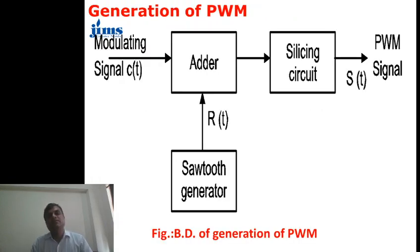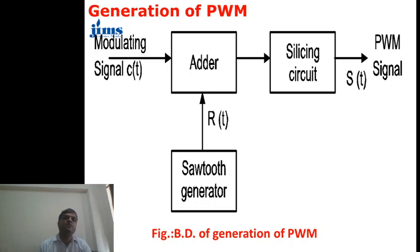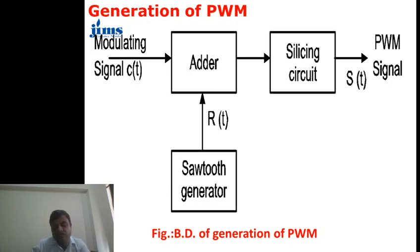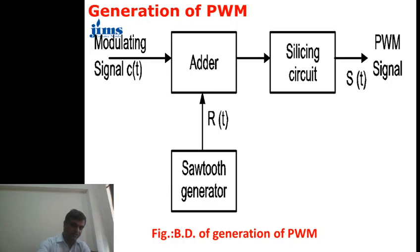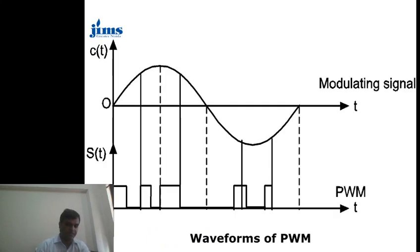Now discussing pulse width modulation in more detail: we use a modulating signal, which is a simple information signal, and it is passed through a pulse signal. In the case of pulse width modulation, we use a sawtooth generator because variation of the width is possible with sawtooth generation. After this, the signal passes through an adder circuit and then to a slicing circuit, giving a pulse width modulated output. This is basically the block diagram.